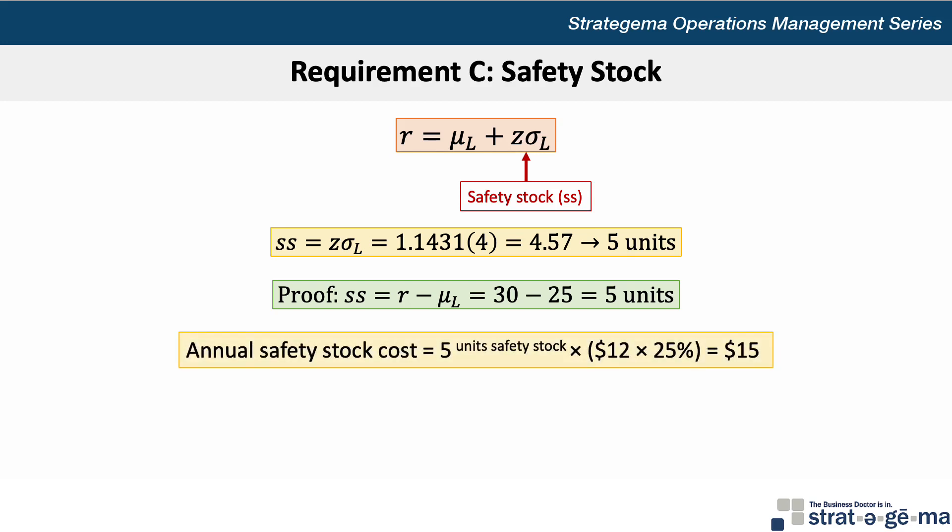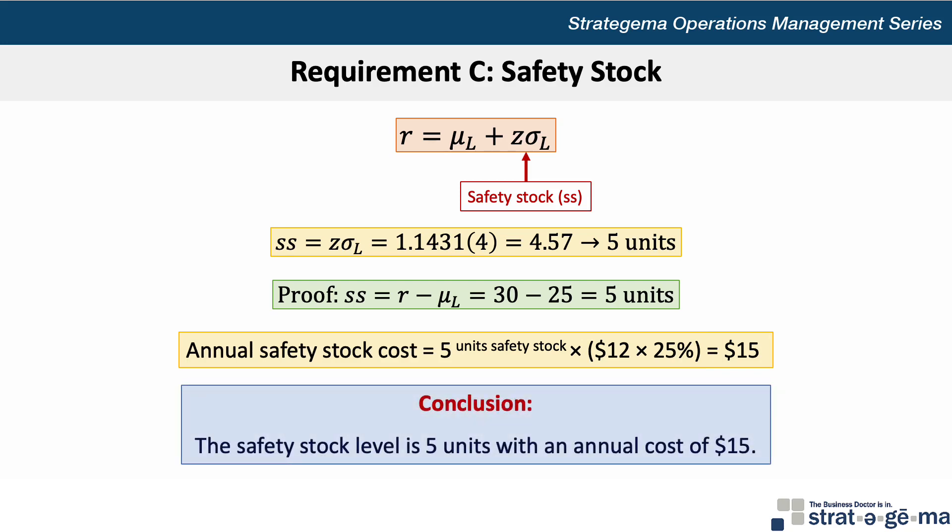Finally, for the annual safety stock cost, we take the 5 units of safety stock and multiply by the $12 selling price times the 25% holding cost rate for a total annual cost of $15. Thus for this requirement, our conclusion is that the safety stock level is 5 units with an annual cost of $15.